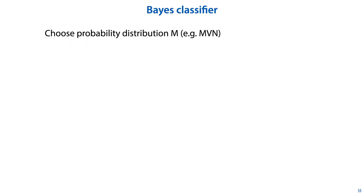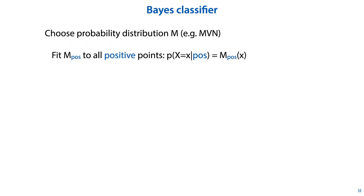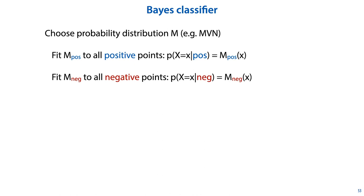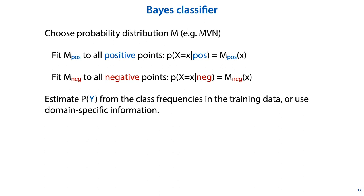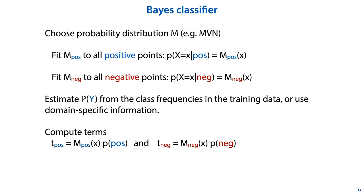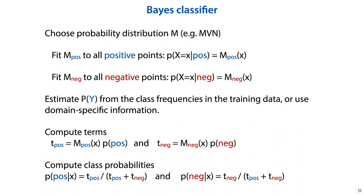Here's the algorithm for a simple Bayes classifier. We choose some model class — some probability distribution — to represent our conditional probability of the data given the class; this could, for instance, be a multivariate normal distribution. We fit one to all the positive points, giving us a probability density on our feature space as the distribution conditional on the class positive, and we do the same for all negative points. Then we estimate the class prior from the class frequencies in the training data, or use domain-specific information. We compute the probability of the data given the class times the prior probability of the class for both the positive and negative class, calling these tpos and tneg, and using these values we can easily compute the class probabilities.